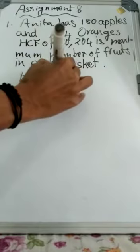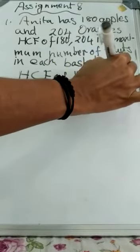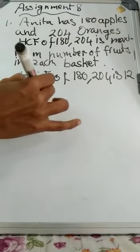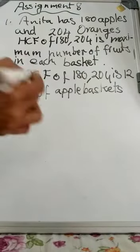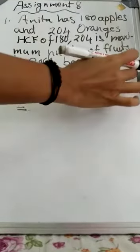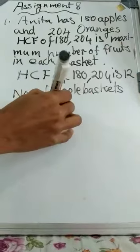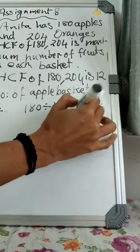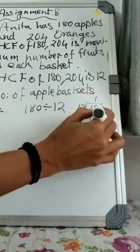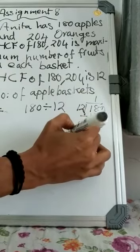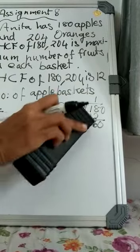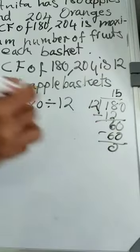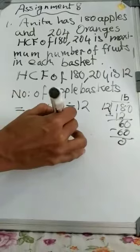HCF of 180 and 204 is 12. Now, what you have to do: find the number of apple baskets. How many apples are there? 180. And you will make packs of 12. So how many baskets means: 180 divided by 12. 12 into 15: 12 times 1 is 12, subtract to get 60; 12 times 5 is 60. So you write 15 here. How many baskets of apples? 15 baskets of apples.